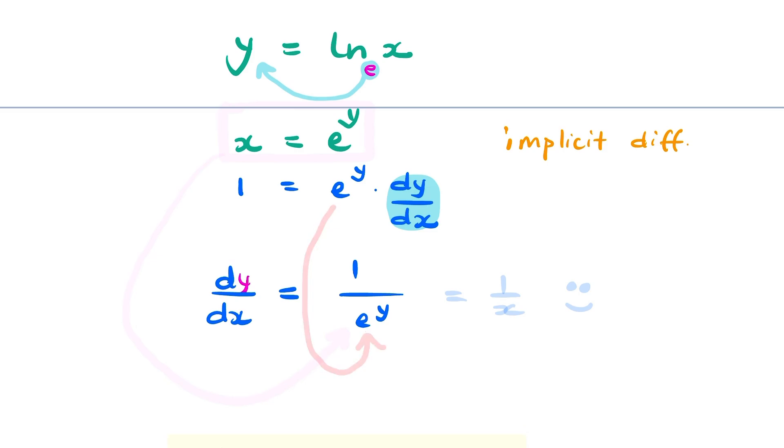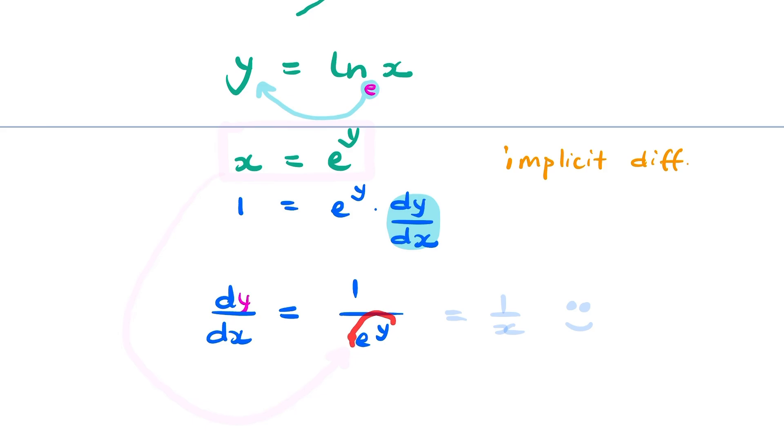Remember, e to the power y is x. That is how we defined x. We said y equals ln x, therefore x equals e to the power y. So we can replace e to the power y with x.